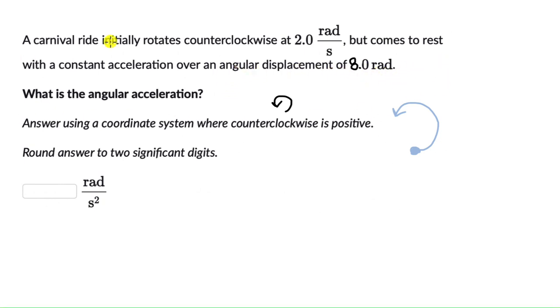So the acceleration must be in the opposite direction. This must be the direction of acceleration which is clockwise. So one thing that we can say is that the acceleration will really be negative because if counterclockwise is positive, acceleration is in clockwise direction. Only then the ride came to rest.